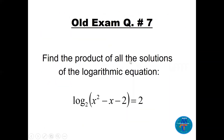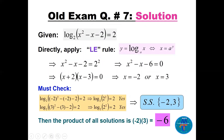Question seven: find the product of all solutions of log base 2 of (x² − x − 2) equals 2. Applying the logarithm rule directly, x² − x − 2 equals 2² equals 4, so x² − x − 6 equals 0. Factoring gives (x+2)(x−3) equals 0, so x equals −2 or x equals 3. Checking both: both are accepted. The solution set is {−2, 3} and the product is −6.